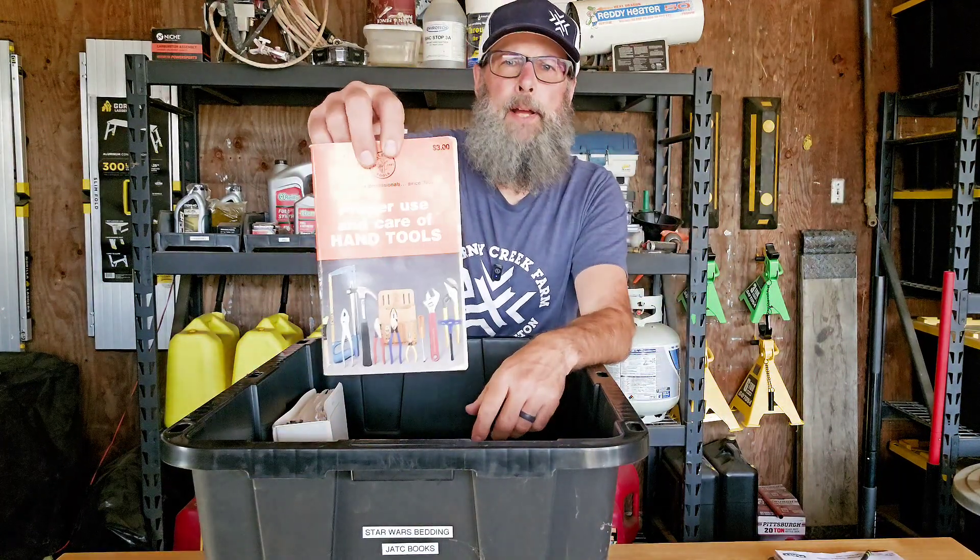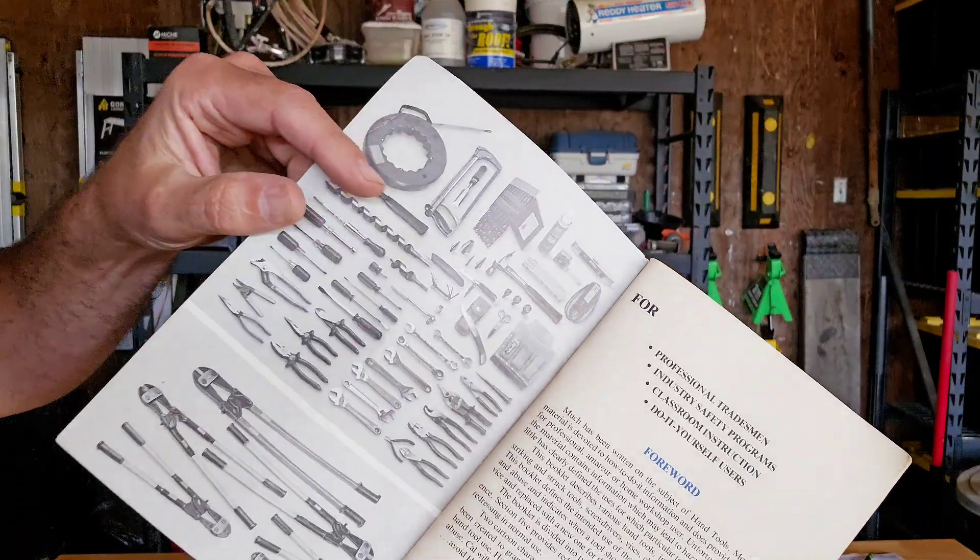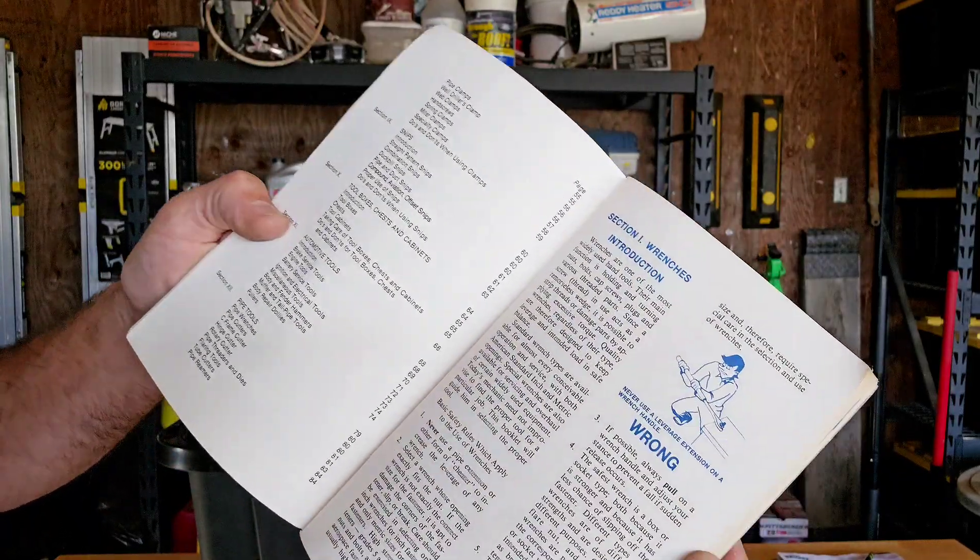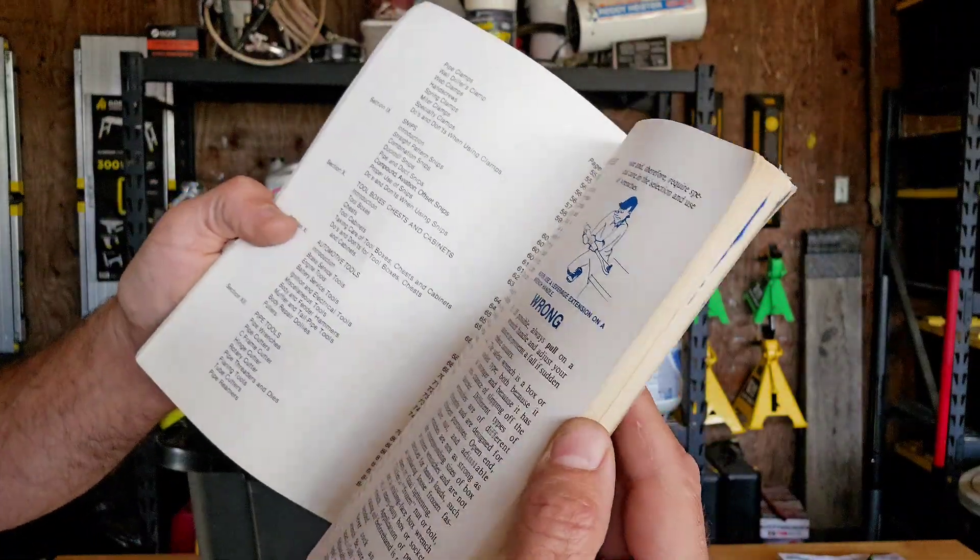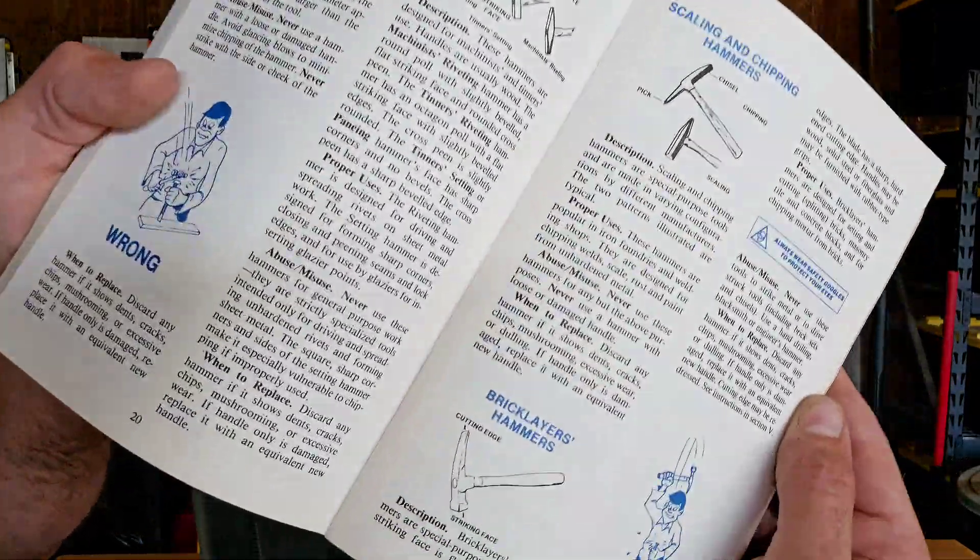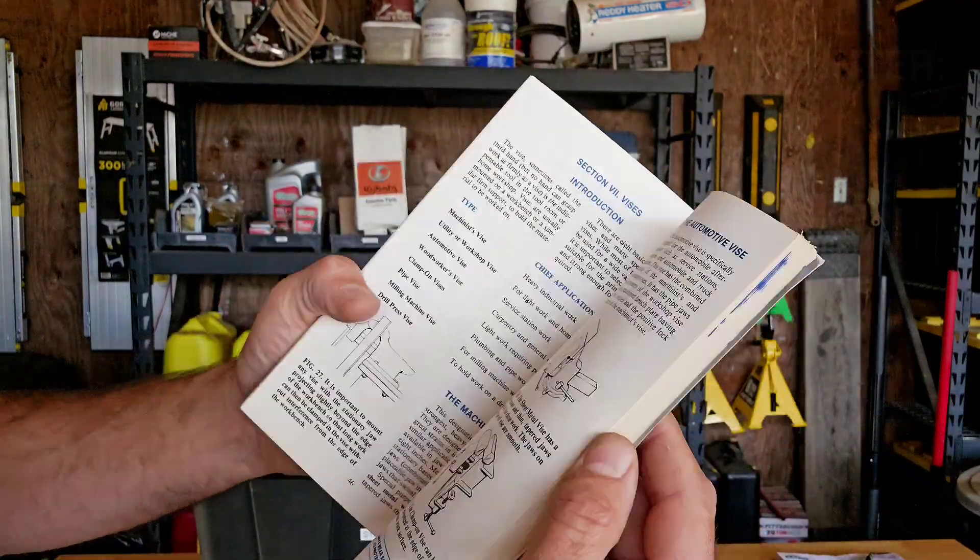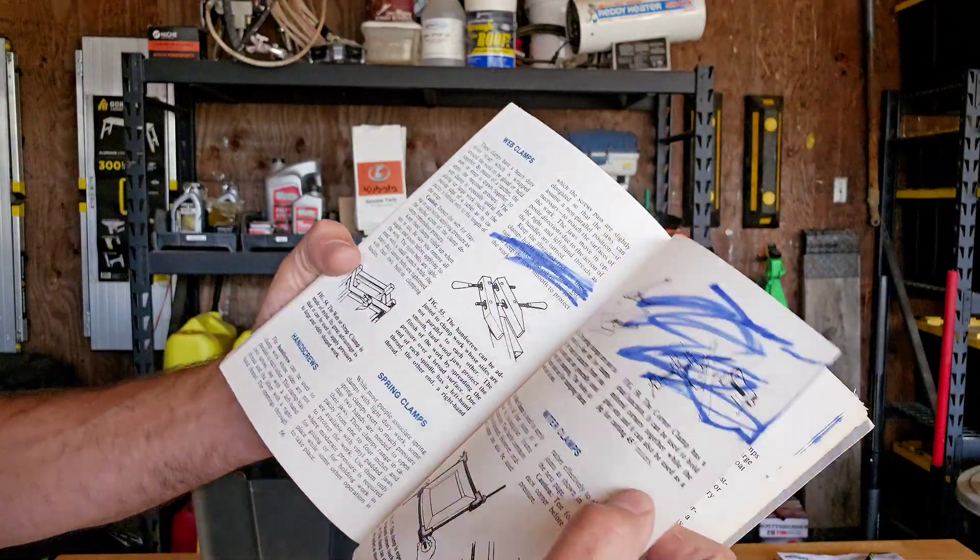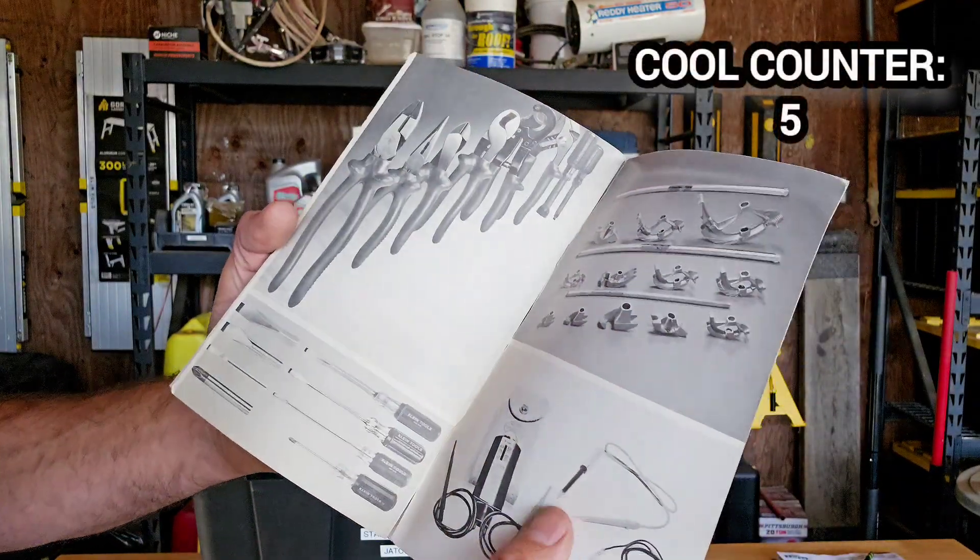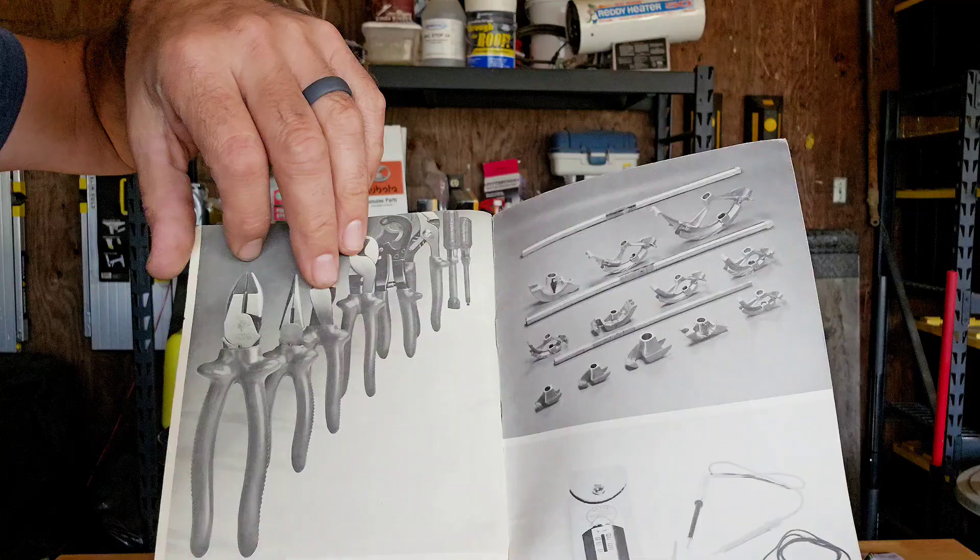What is this? Proper use and care of hand tools from Klein. It has your basic forward and a picture of all the tools they're trying to sell you. There's the table of contents, illustration of how to use a wrench the wrong way. Some scaling and chipping hammers showing how to hit the wrong way. Nail pullers, specialty screwdrivers. This is kind of cool. Vices.